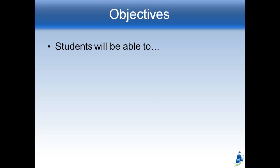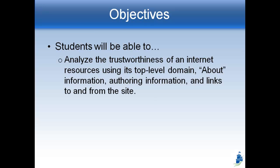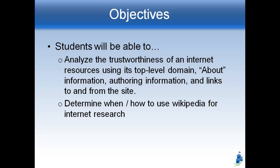Some objectives for today. By the end of this lesson, you should be able to analyze the trustworthiness of an internet resource using its top-level domain, its about information, who the author is, and links to and from the site. We're also going to talk a little bit about Wikipedia so you can see how and when that's appropriate to use for internet research.